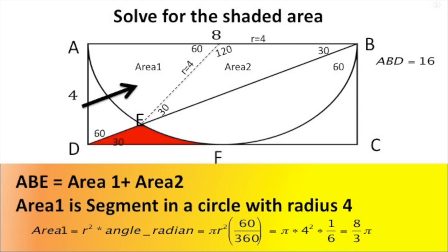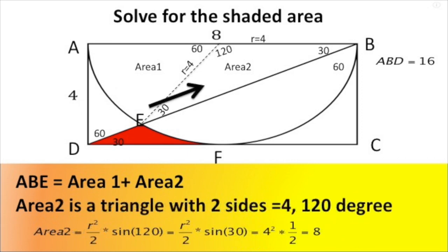The area of the sector equals π r² multiplied by the angle fraction: π times four squared times one-sixth equals 8π/3. Next, area two is a triangle with both sides equal to four and an inner angle of 120°. Using the formula: (a × b)/2 × sin(inner angle), we get r²/2 × sin(120°). Since sin(120°) equals sin(60°) = √3/2, but simplifying: four squared divided by two is eight.